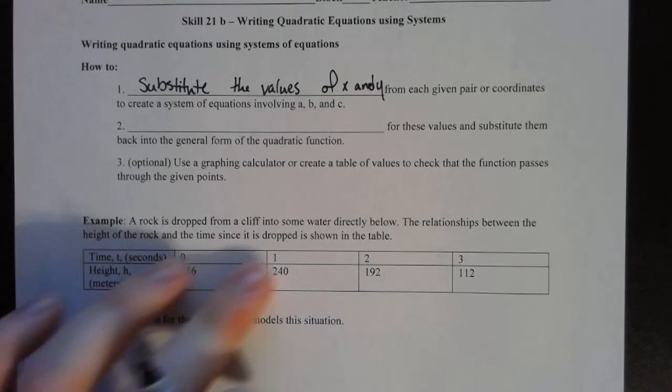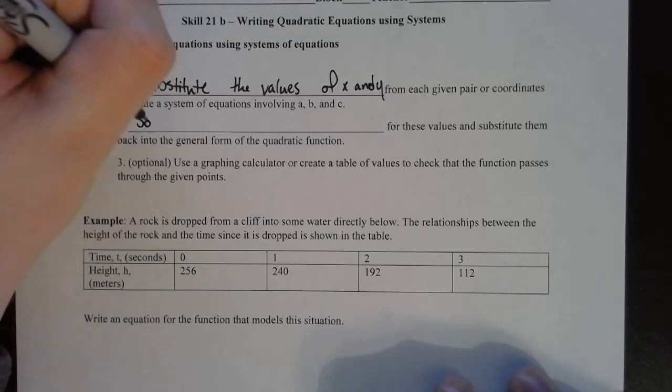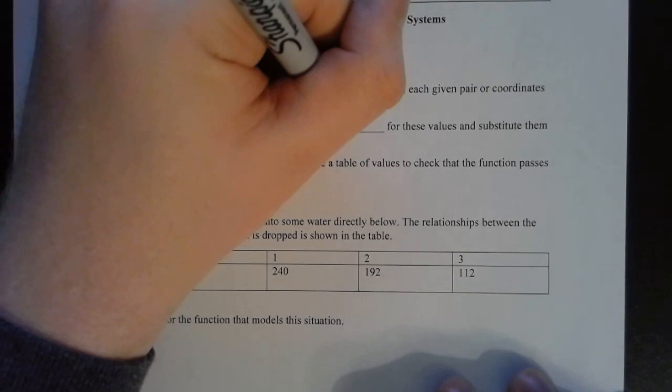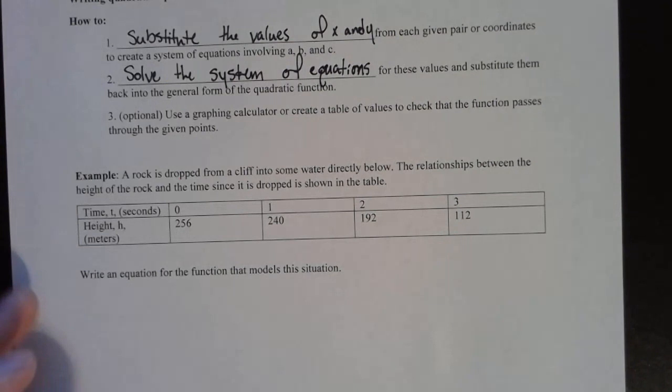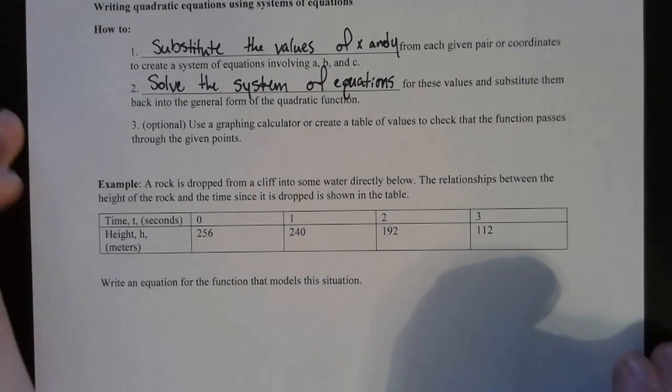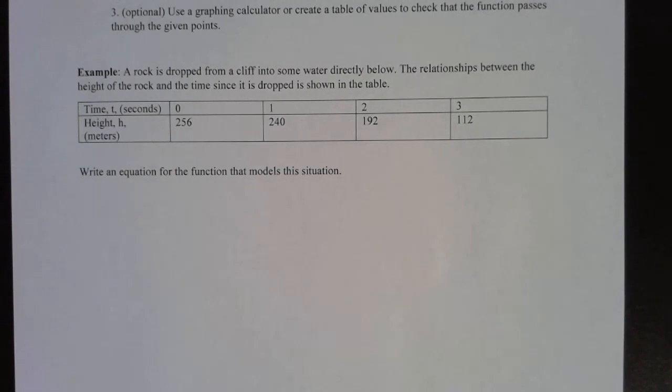So we are first going to substitute the values of x and y from each given pair of coordinates to create a system of equations involving A, B, and C. So for all of these we're going to be given a table like down here and then we're going to substitute in these x and y values to create a system. So then we can solve the system of equations. If you have a graphing calculator you can check the table of values that the function passes through the given points.